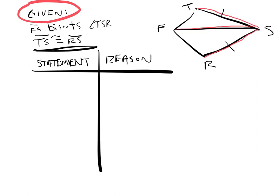Okay, so we'll start with what we're given. We have our statement and our reason. Our first statement is obviously going to be that FS bisects angle TSR. Also, we know that TS is congruent to RS. Put the line over it because it's a segment.